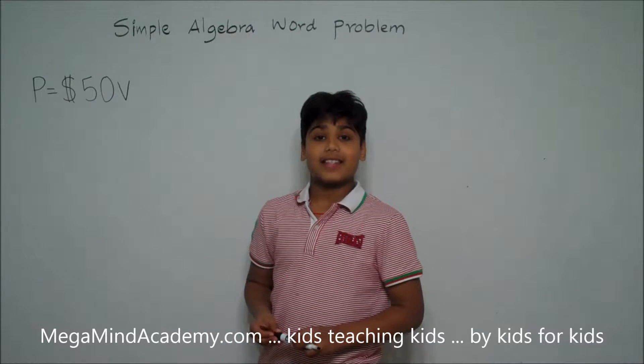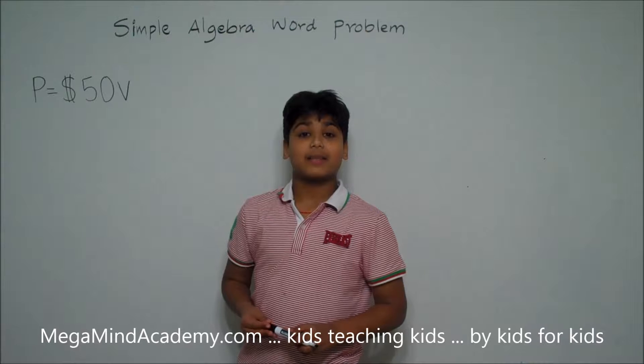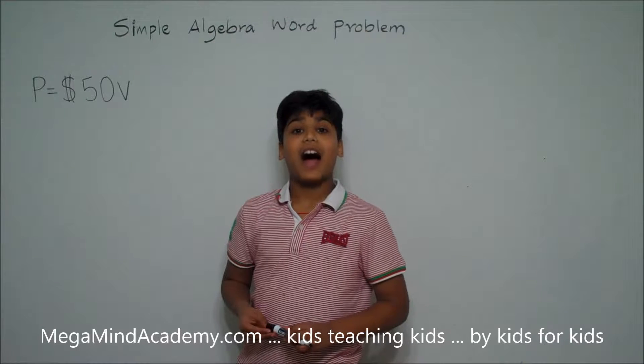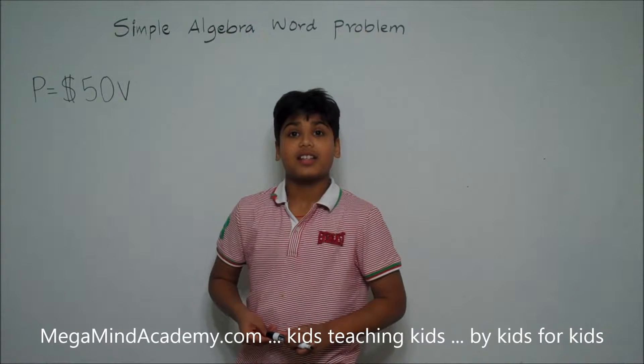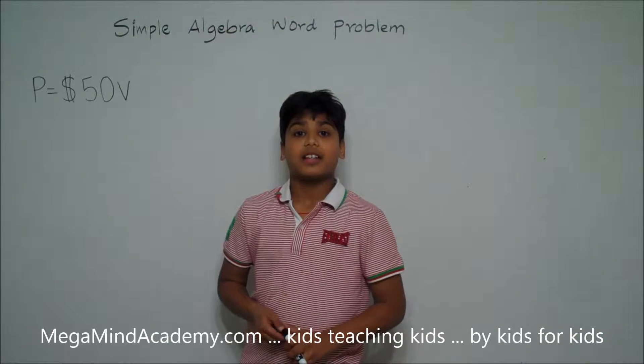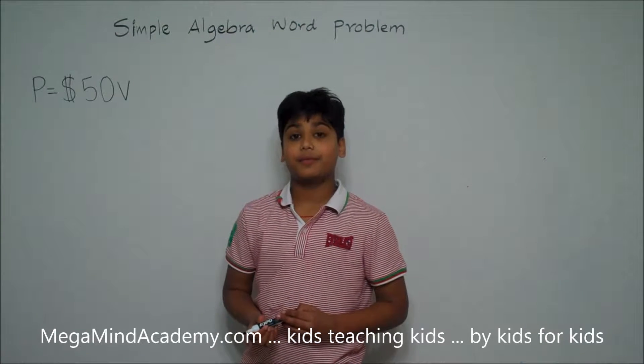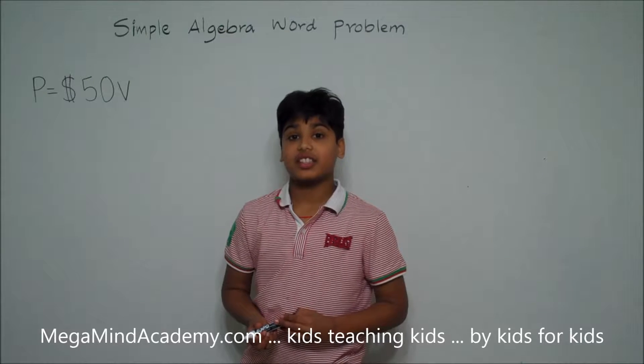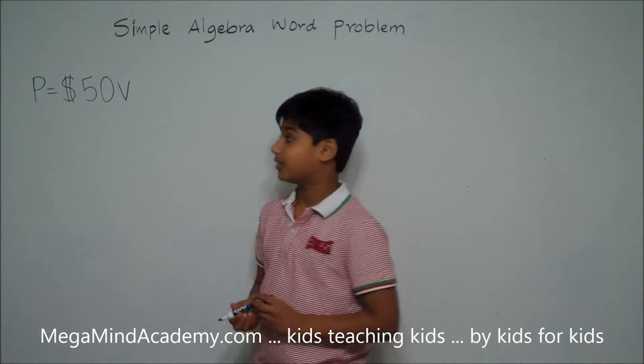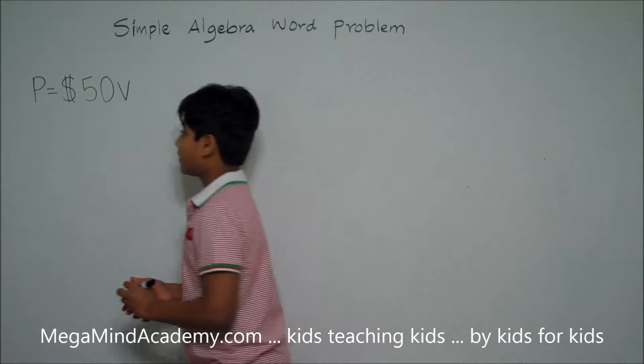And let's say he's going to buy 5 books which are 7 and a half V dollars each.